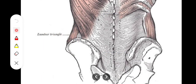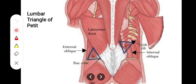The next one is the lumbar triangle of Petit, which is located a bit inferiorly, just above the iliac crest. It is bounded medially by the latissimus dorsi, laterally by the external oblique muscle of the abdomen, and inferiorly by the superior border of the iliac crest. You can see it here — this is the latissimus dorsi, this is the external oblique, and this is the iliac crest.